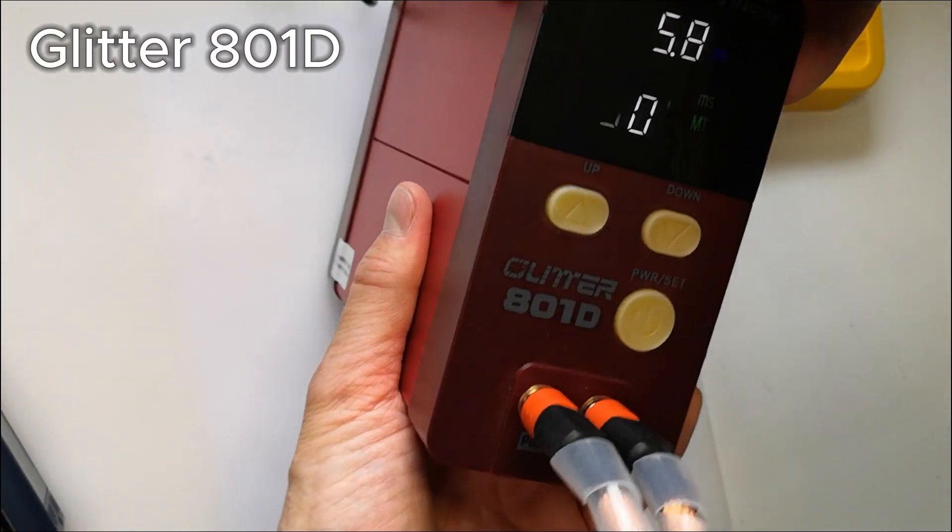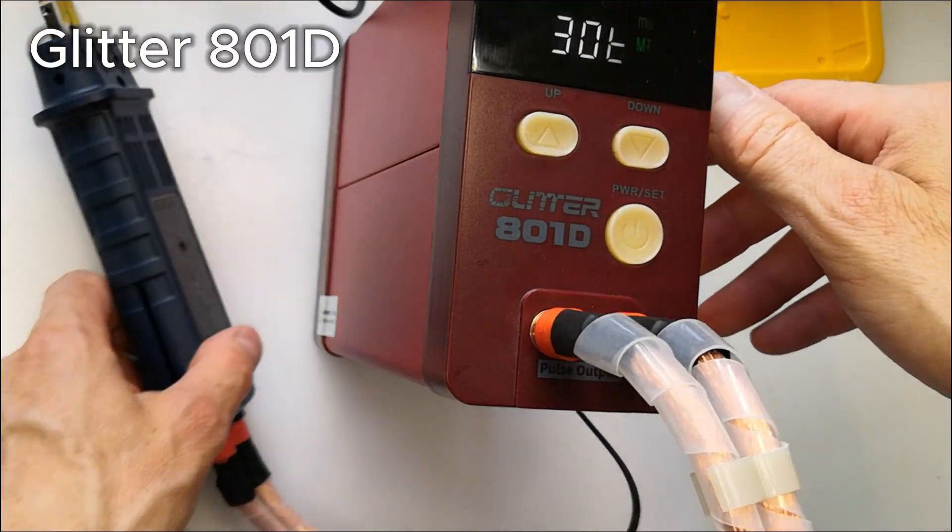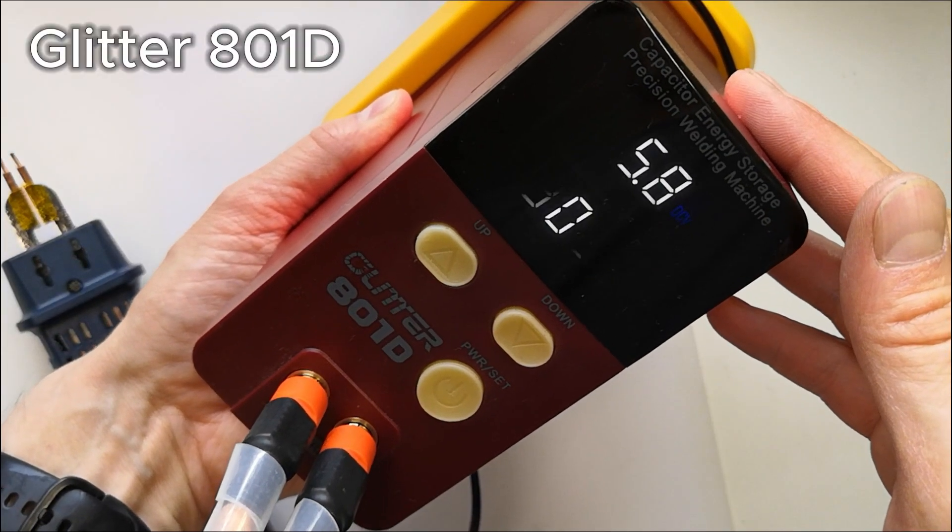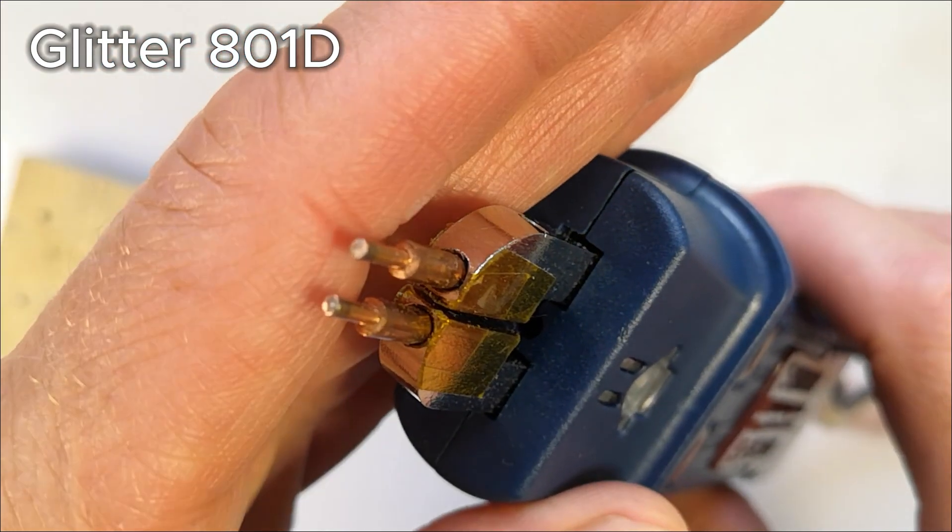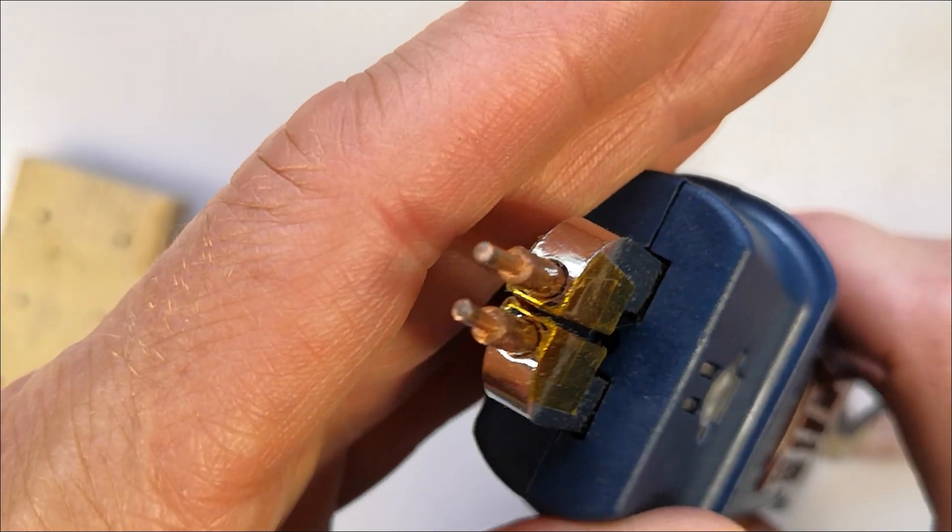Next we have the Glitter 801D. This one costs around $200. It uses a super capacitor and has a higher welding voltage of 5.8 volts.